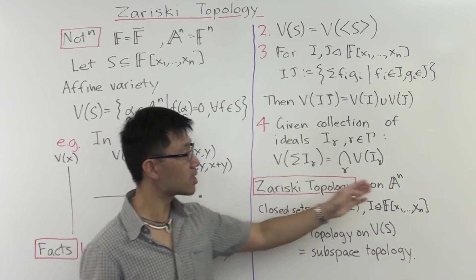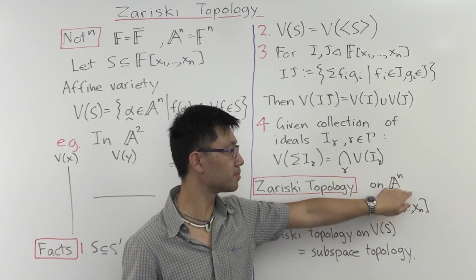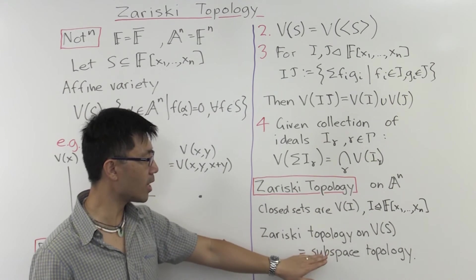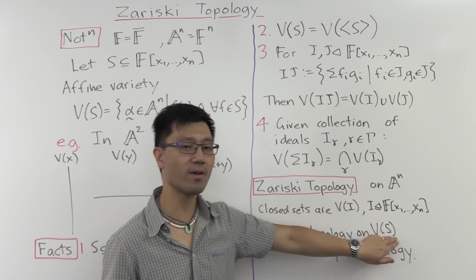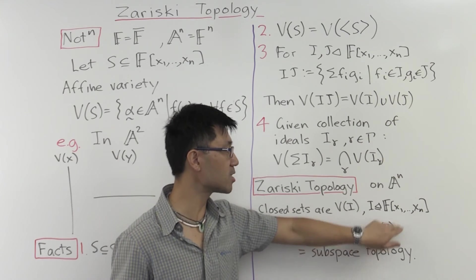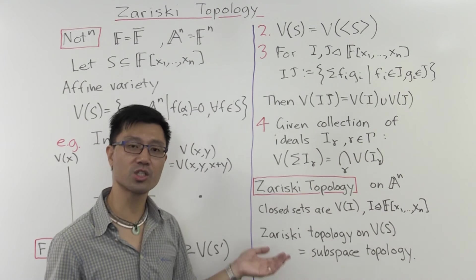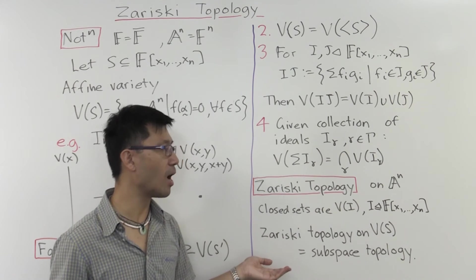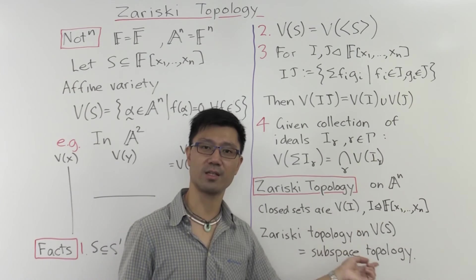So this gives you the Zariski topology on A^n. And then you can ask, well, what about any variety V of S? Well, this is just a subset of this. So you can just look at the subspace topology, and that gives you the Zariski topology on this V of S.